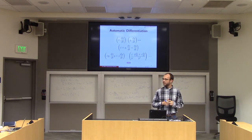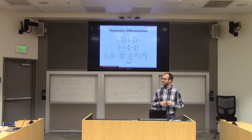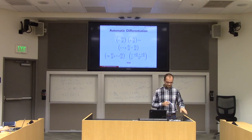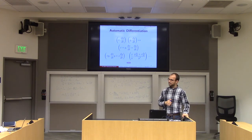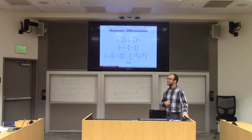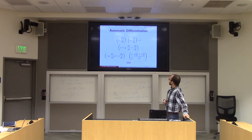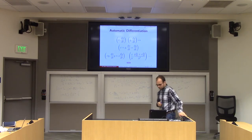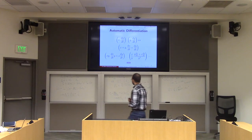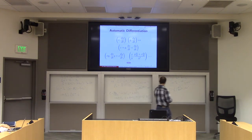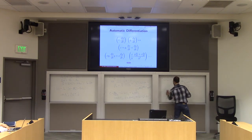What's the drawback of auto-diff? It's slow. A student asks: would you be computing Newton's method with all this funny addition and multiplication? Exactly. Let's do a quick example.